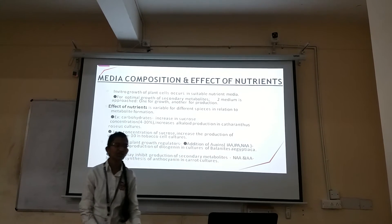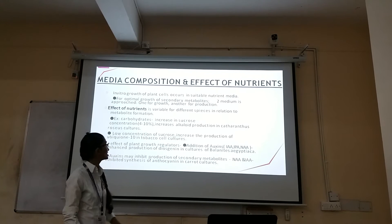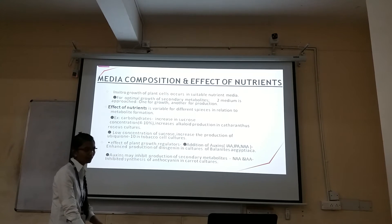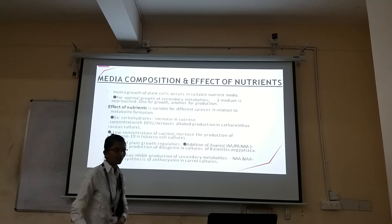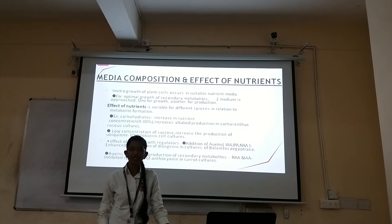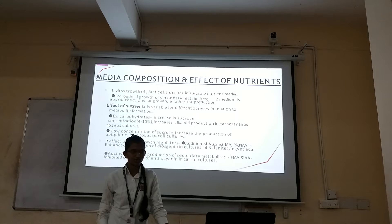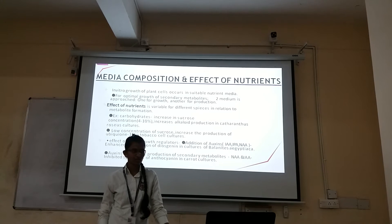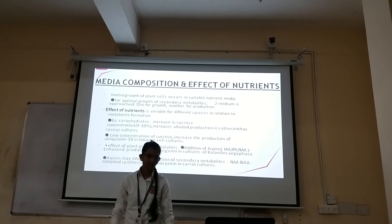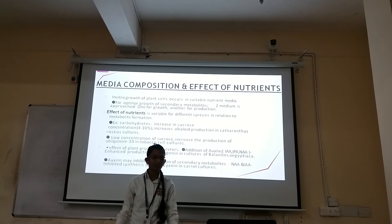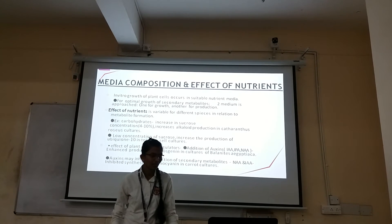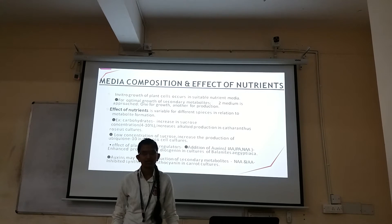Media composition and effect of nutrients: for optimum growth and secondary metabolite production, two media are used — one for growth and another for production. Nutrients such as carbohydrates, pH, and plant growth regulators are all factors that can be altered.